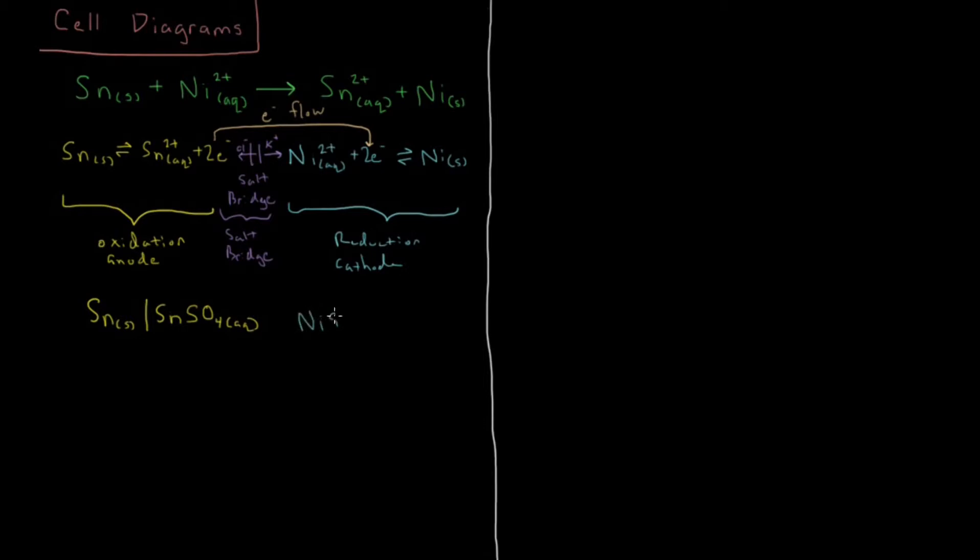So we're going to have nickel sulfate, again including that counter ion in solution there. Then a single bar, and on the outside we have our cathode there. And then in the middle, how we represent our salt bridge is just by a double bar. There's nothing else there. So this result here, this final result, is our complete cell diagram for this electrochemical cell of tin and tin sulfate at our anode and nickel and nickel sulfate and nickel at our cathode.